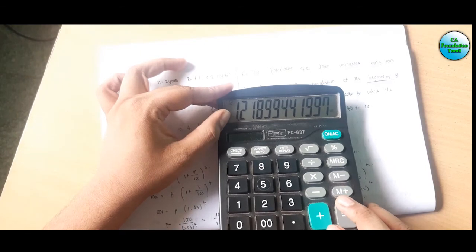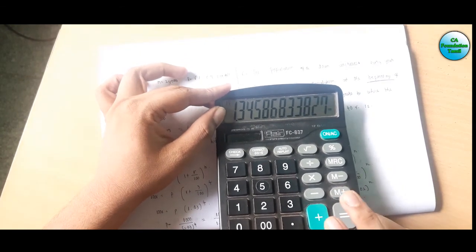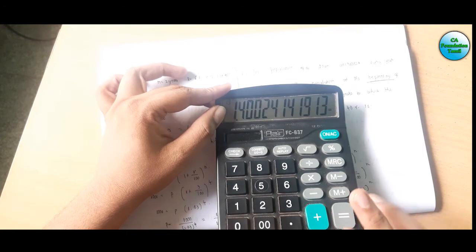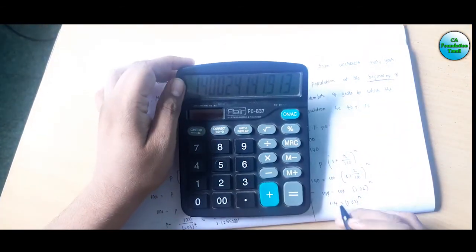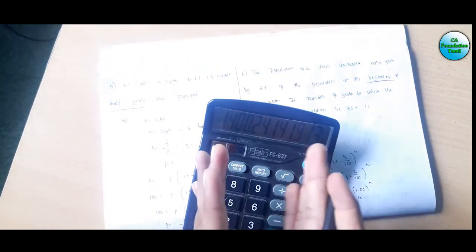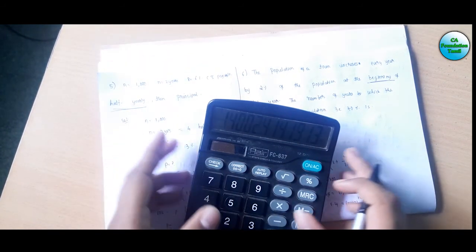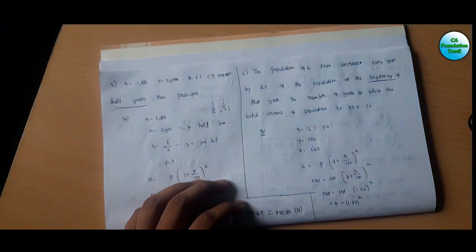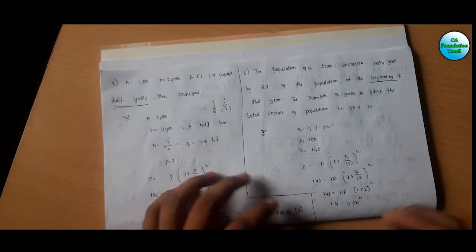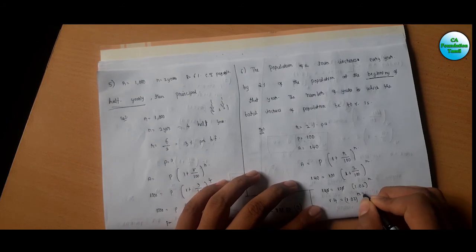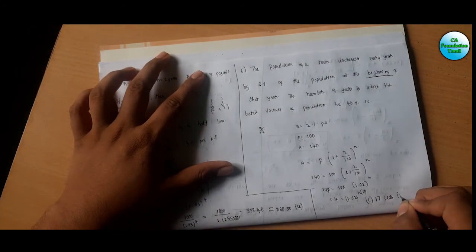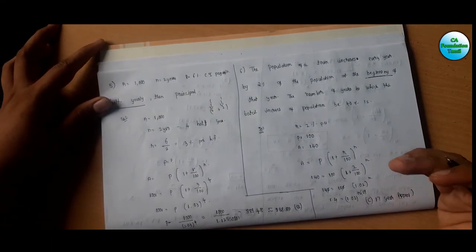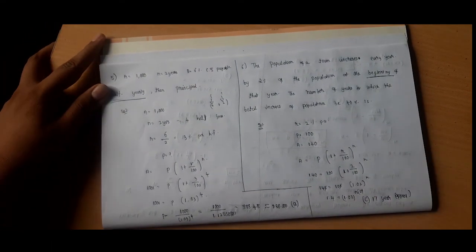We continue to n equals 17: starting from 10, we multiply 1.02 seven more times — 11, 12, 13, 14, 15, 16, 17 — giving approximately 1.400 something. This is approximately equal to 1.4. So n equals 17 years. Option C is the correct answer: approximately 17 years. Thank you for watching, see you in the next video.